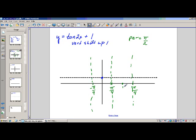In between is pi over 2, and guess what? The y-coordinate is going to be 1 again, because I'm shifting up 1. These are pi over 2 apart. The asymptotes are pi over 2 apart.